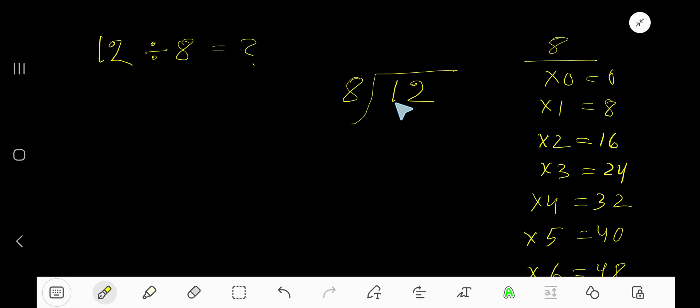8 goes into 1 how many times? 0 times, as 1 is less than 8. 0 times 8 is 0, subtract to get 1. Bring down the 2.